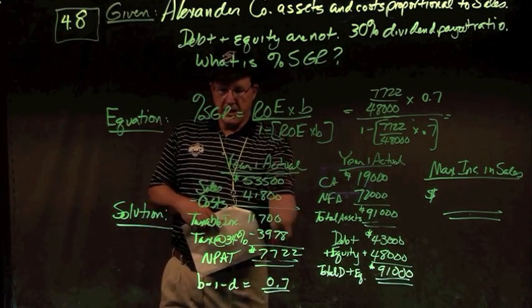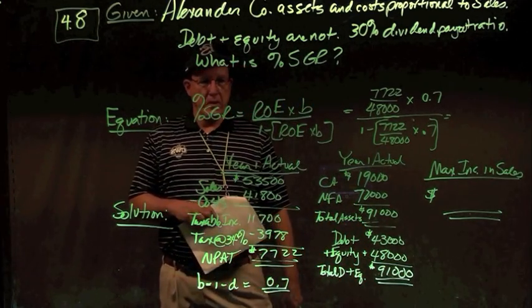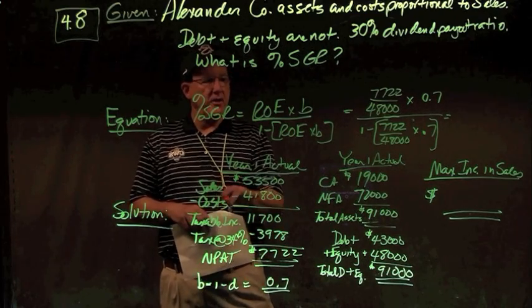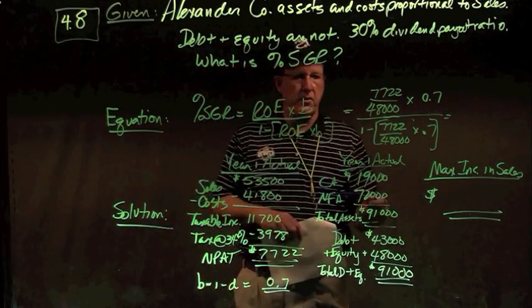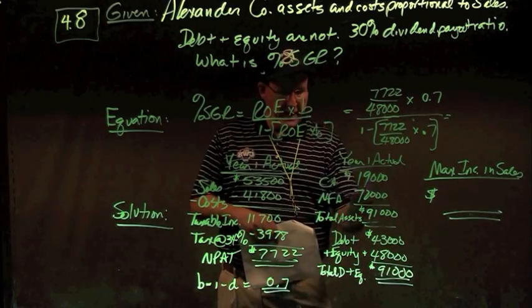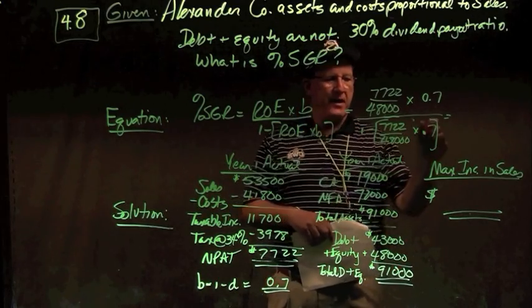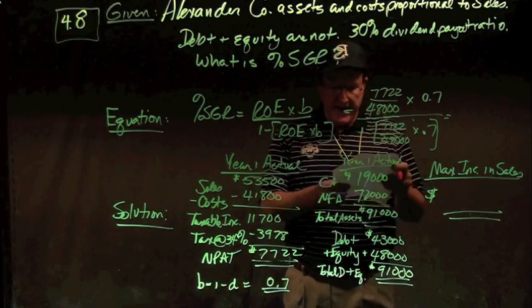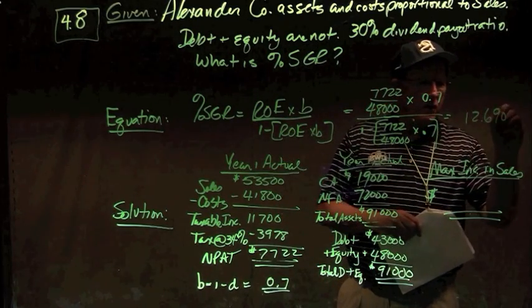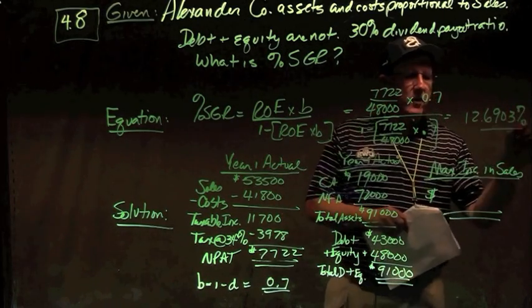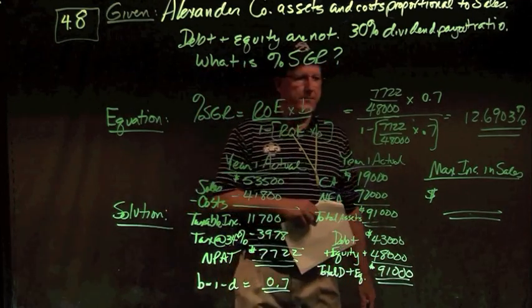I have my income statement, year one actuals, and I have my balance sheet, year one actuals. And from that is where I'm going to get my SGR. I always use year one when calculating IGR and SGR. So in this case, I take my net income of $7,722, return on equity of $48,000, and multiply that times B of 0.7 divided by one minus the numerator, and I get a sustainable growth rate of 12.6903%. That's the maximum increase in sales I can get without any new equity financing, debt financing is okay to balance a balance sheet.